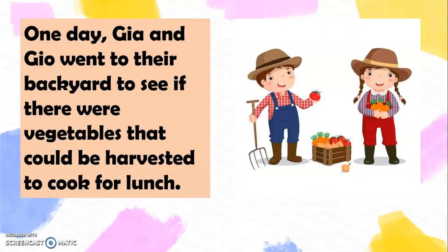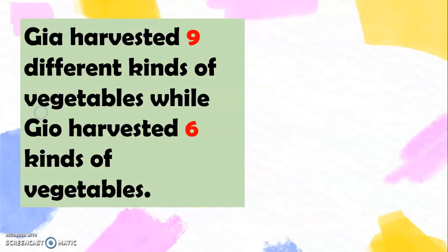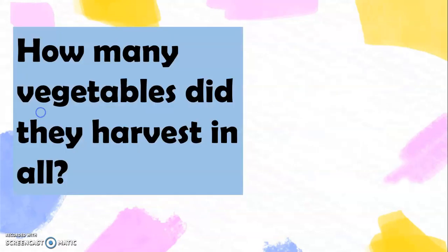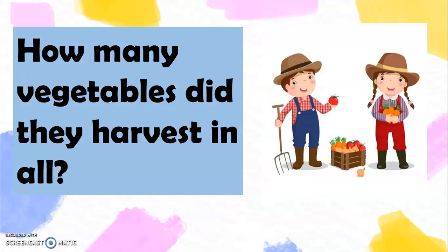One day, Gia and Gio went to their backyard to see if there were vegetables that could be harvested to cook for lunch. Gia harvested nine different kinds of vegetables while Gio harvested six kinds of vegetables. How many vegetables did they harvest in all?